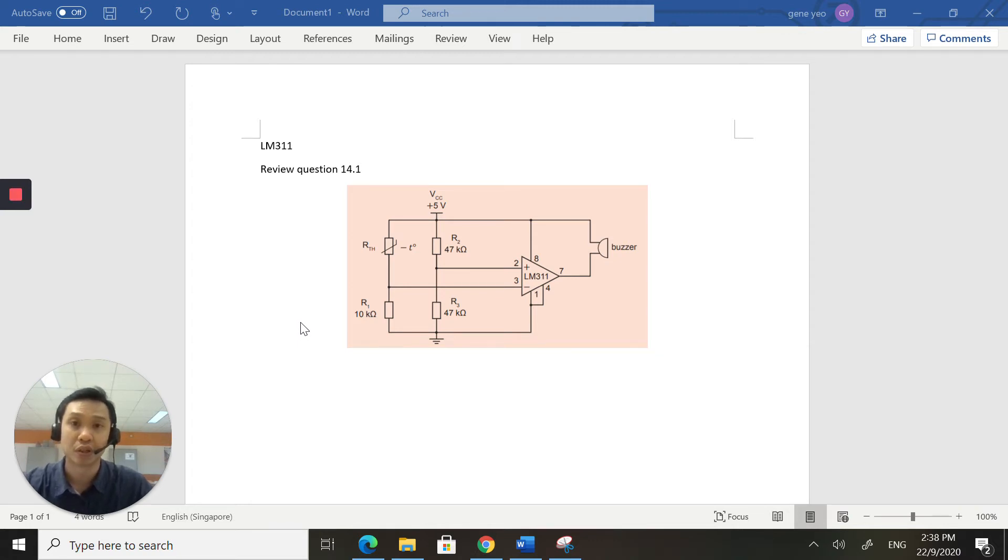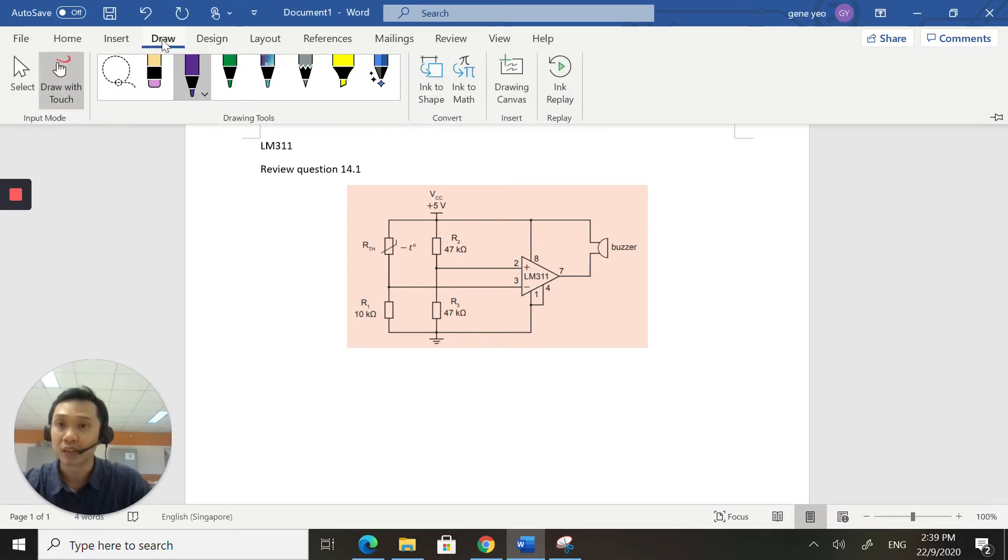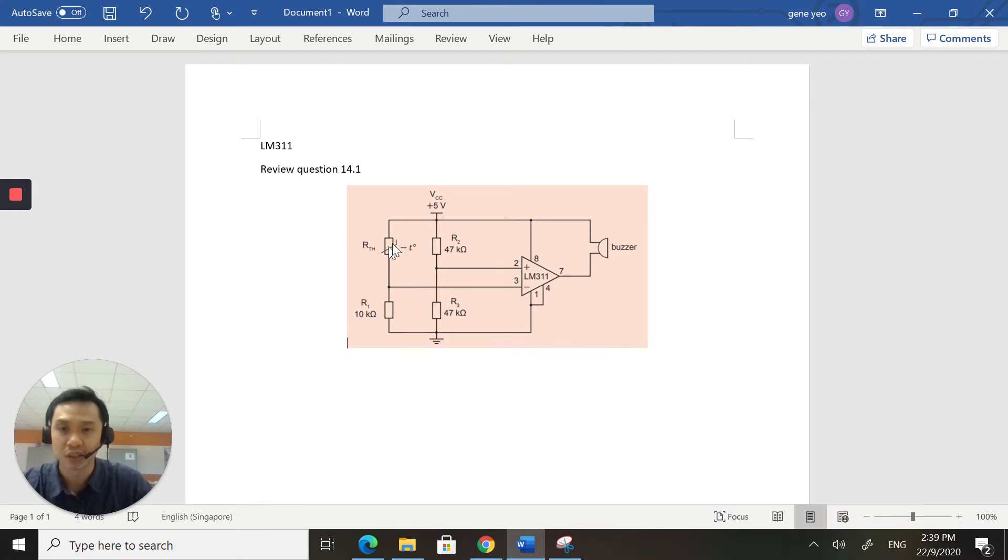Welcome back to part 2 of the video on LM311 where I'm going to help you solve review question 14.1 and understand what this circuit does. By now, you should know that this is the symbol for a thermistor, an NTC thermistor. This is a buzzer. You should be able to figure out that this is a temperature sensor, and when the temperature goes too high or too low, the buzzer will buzz.